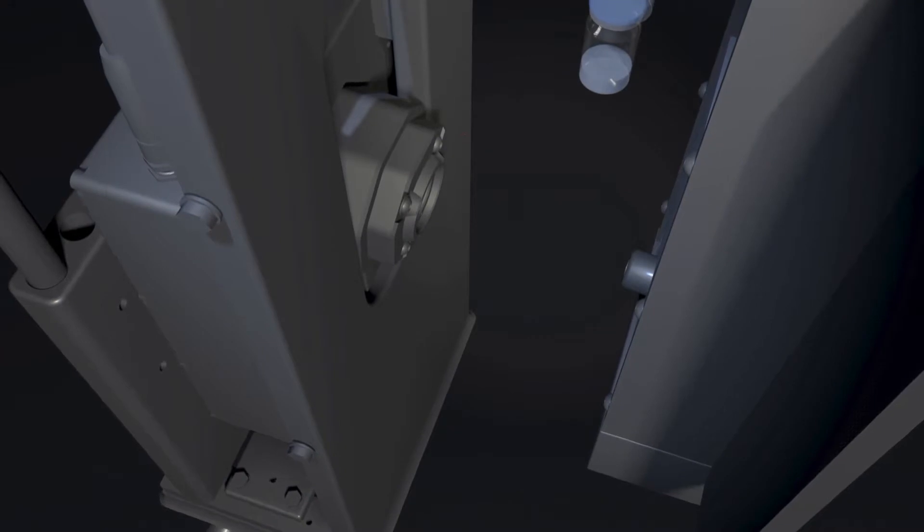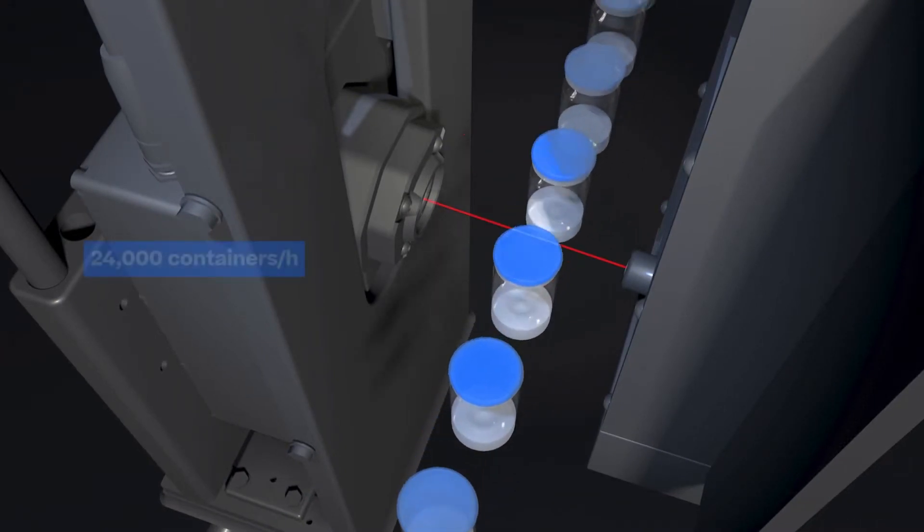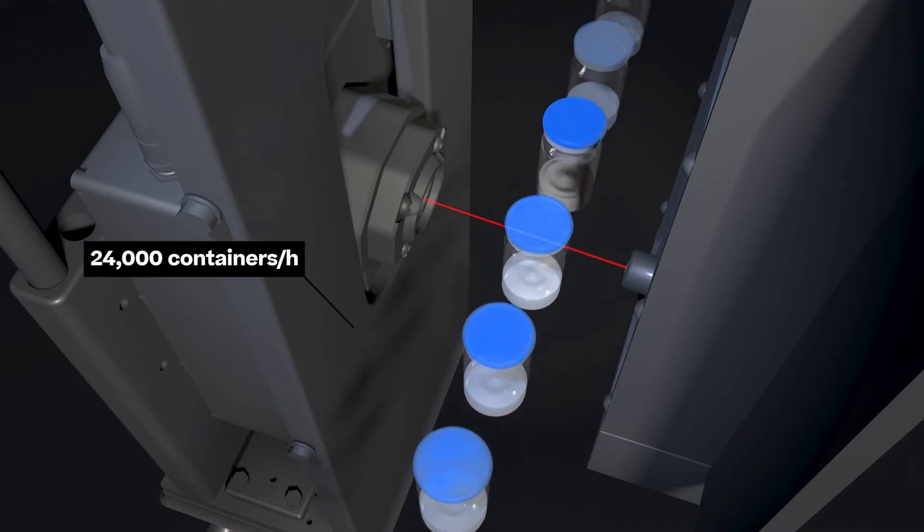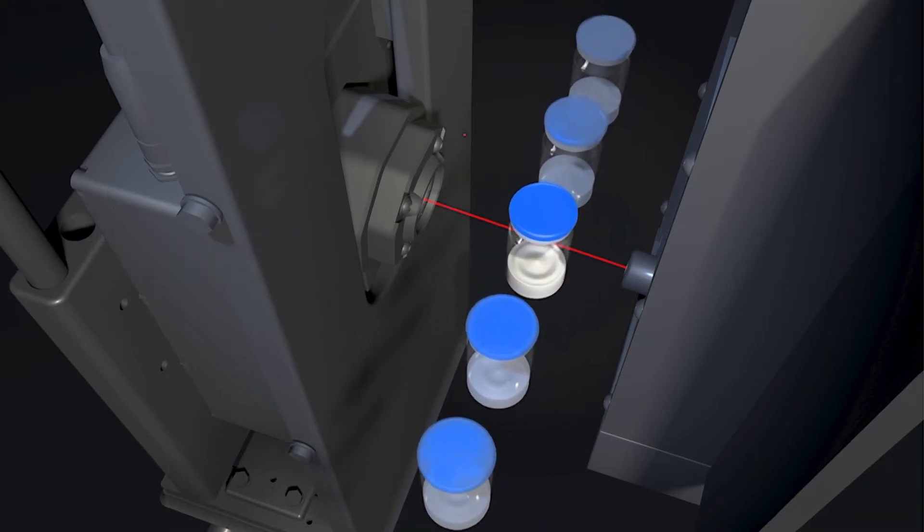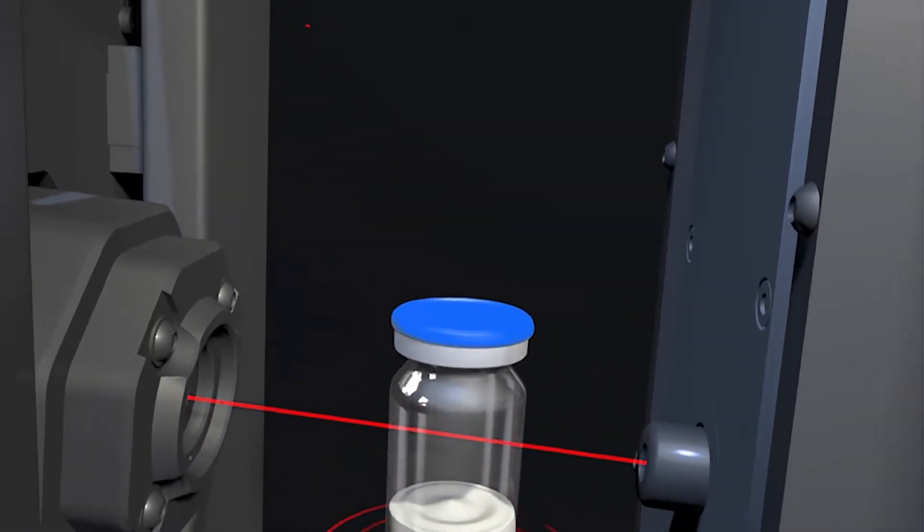Our oxygen-based headspace analyzer detects the tiniest leaks in containers filled with a lyophilized product. Defective containers are removed before they would be further processed. This inspection method can detect leaks indirectly by analyzing the gas within the container.